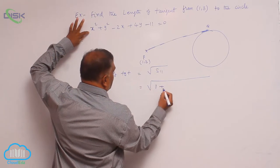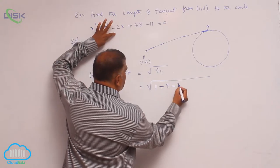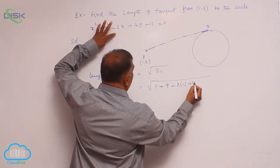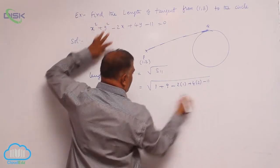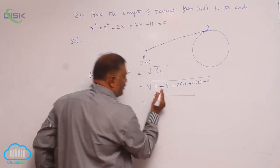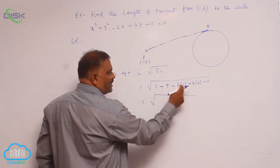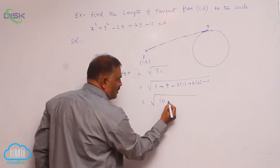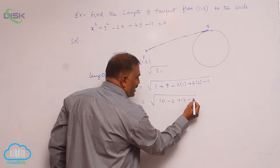This is 1 plus 9 minus 2 into 1 plus 4 into 3 minus 11. This is square root of 9 plus 1, 10, 10 minus 2, 8. This is 10 minus 2 plus 12 minus 11.